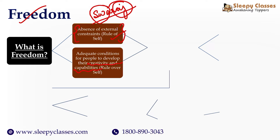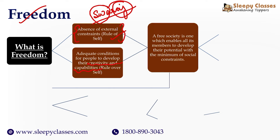There is a positive idea of freedom where we say that the absence of external constraints and domination is not enough. True freedom requires another concept: adequate conditions to develop one's creativity and capabilities. So we can develop our capabilities and creativity, allowing our own personality and self to decide what is good or bad for us and to take more informed decisions. A free society enables all its members to develop their potential.